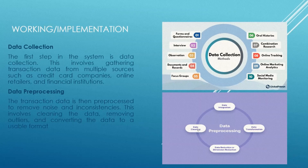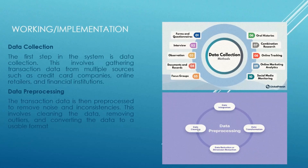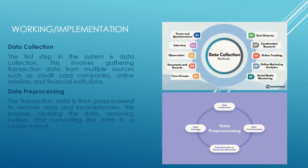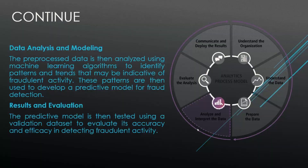Working Implementation: The first step in the system is data collection. This involves gathering transaction data from multiple sources such as credit card companies, online retailers, and financial institutions. The second step is data preprocessing, where the transaction data is preprocessed to remove noise and inconsistencies. This involves cleaning the data, removing outliers, and converting the data to a usable format.